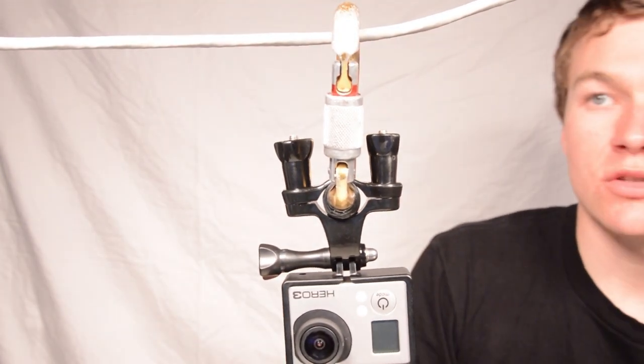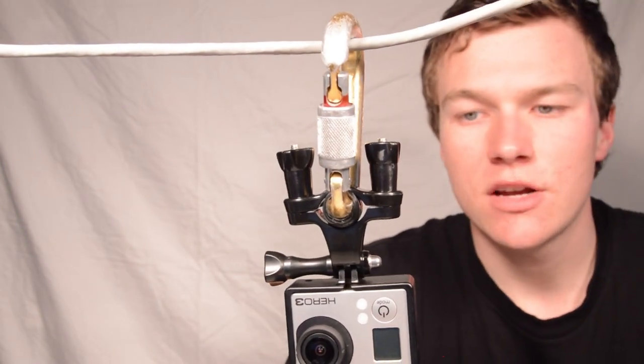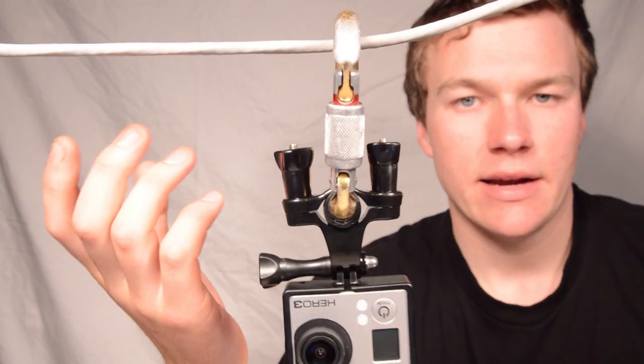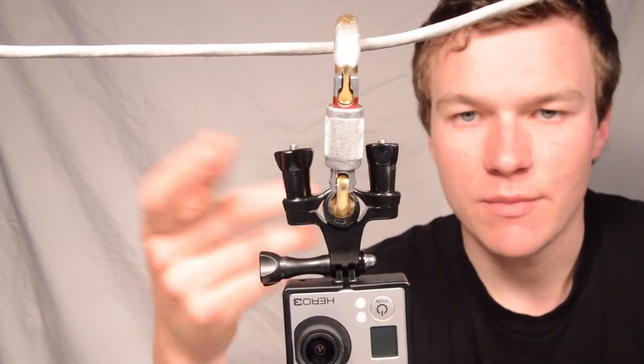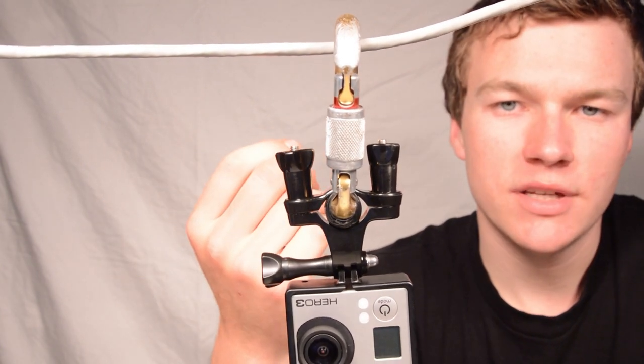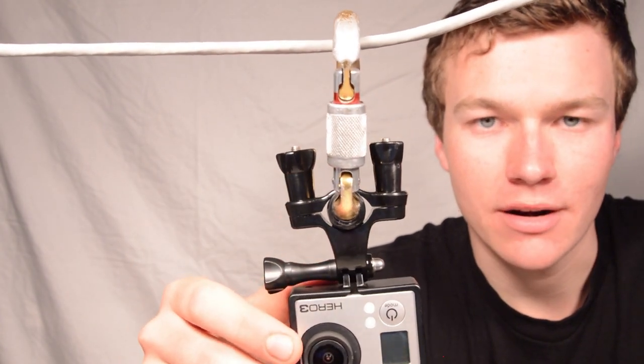Now, it's not super sturdy, so if whatever you're clipping it to is moving a lot, you're probably going to get some shake in your video. But for the most part, if it's just, say, a wire that goes somewhere, or it's something that's hanging over a track you're shooting onto, it's a pretty simple, secure mount. And it really doesn't take anything at all to set up. One handlebar mount, one carabiner, and then your camera's on it.